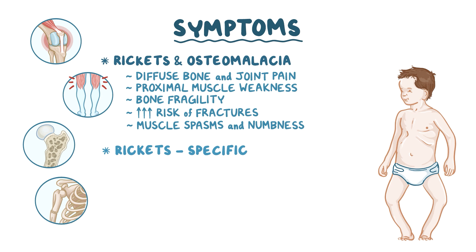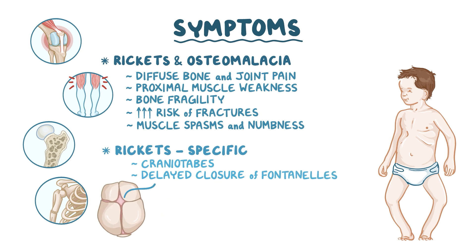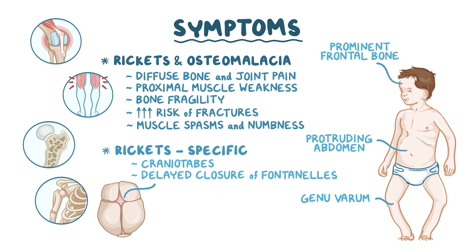Ricket-specific symptoms include thin, soft skull bones, which is called craniotabes; delay in the closure of fontanelles; and bow legs, also known as genu varum. There may also be an enlarged prominent frontal bone and, with severe disease, a protruding abdomen. Additionally, a ricketic rosary may be seen, where little bumps appear along the chest due to the widening of the junction between the ribs and the costal cartilage in front of the ribcage.